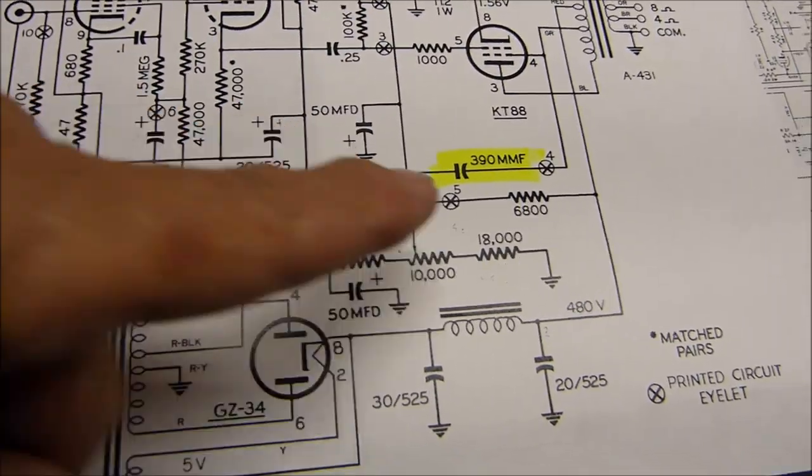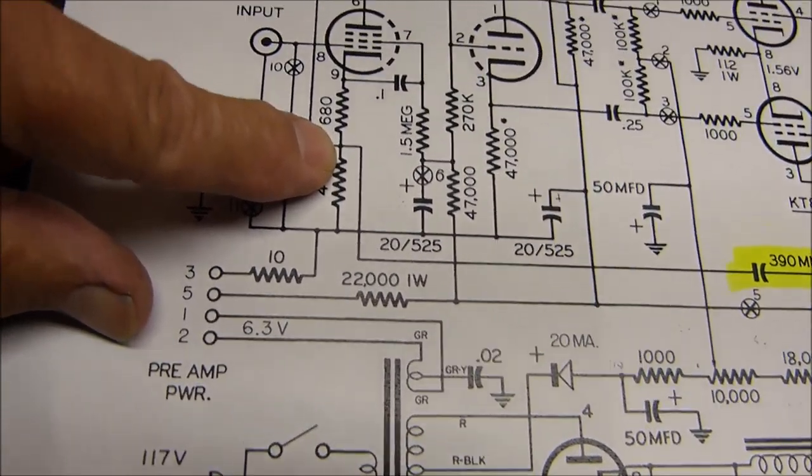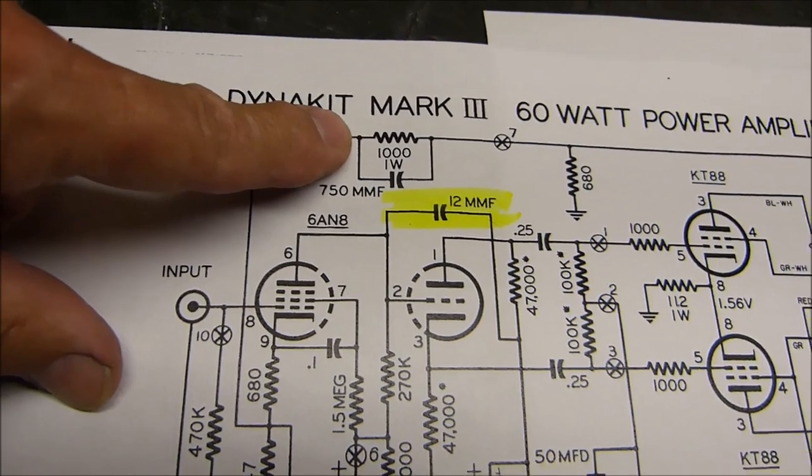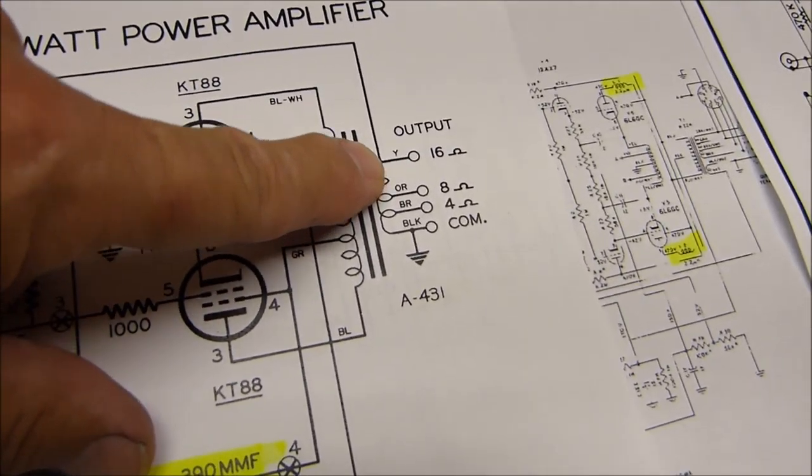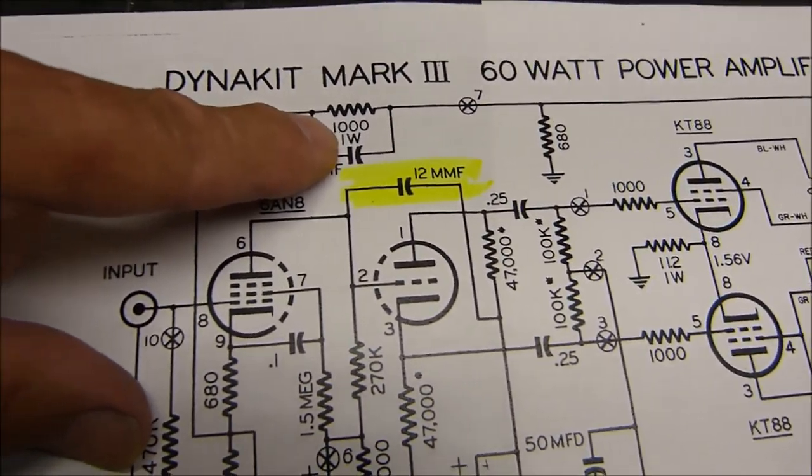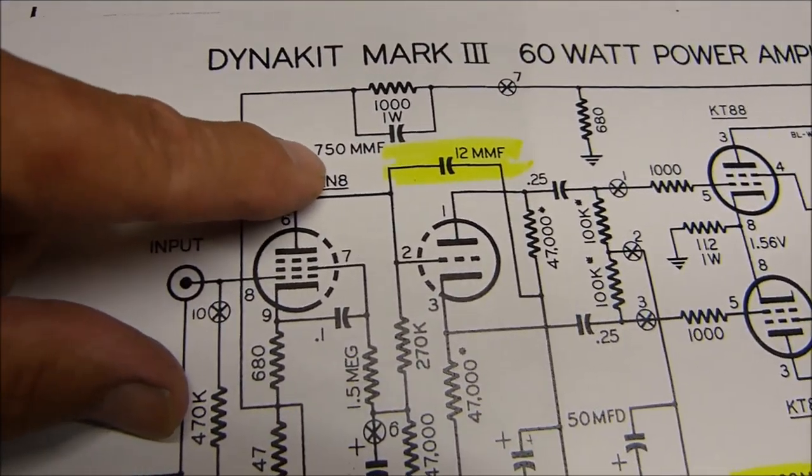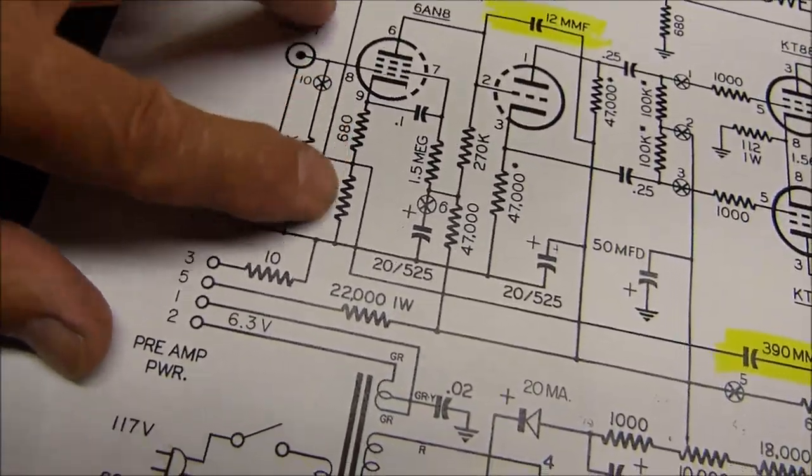It goes back actually into the same point as the negative feedback. The negative feedback comes off the 16 ohm tap, goes through a voltage divider right here: 680 ohms, then a 1k 1 watt, 750 picofarad into this little voltage divider.